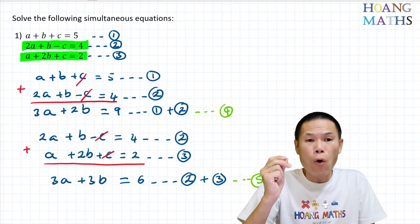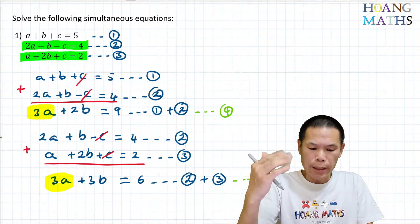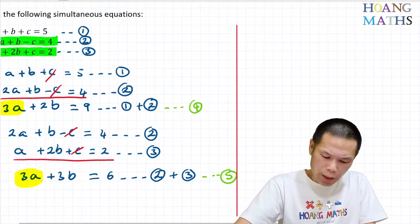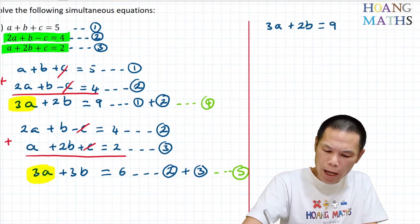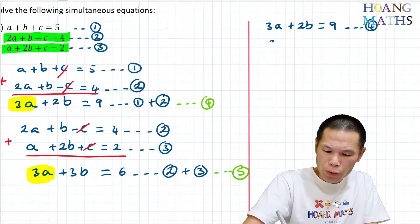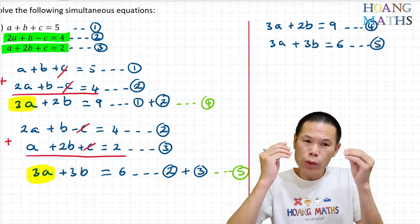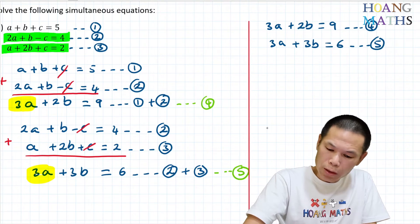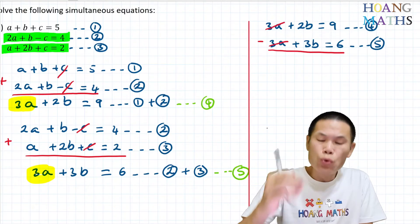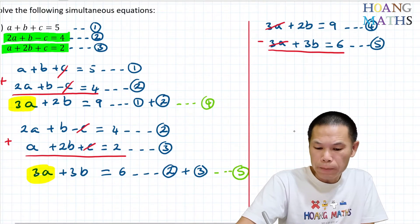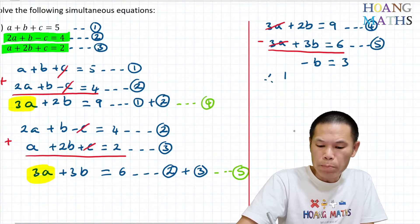With equations four and five, the coefficient of a is the same in both, so we just subtract to eliminate a. Equation four is 3a plus 2b equals nine, and equation five is 3a plus 3b equals six. Subtracting: 3a minus 3a cancels, and 2b minus 3b gives negative b. Nine minus six equals three. So negative b equals three, which means b equals negative three.